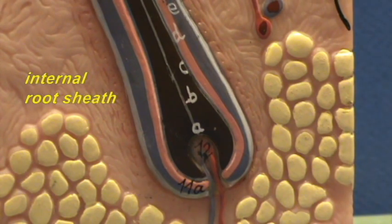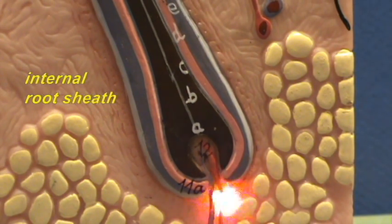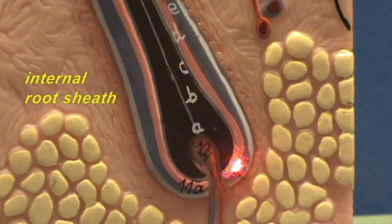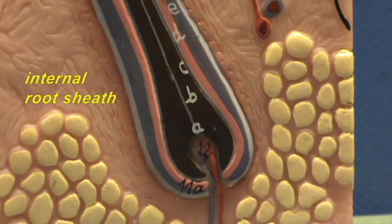So the internal root sheath is a structure which continually grows and it grows from the hair bulb like the hair. So it would continually be produced right over here and push up towards the upper part of the follicle.